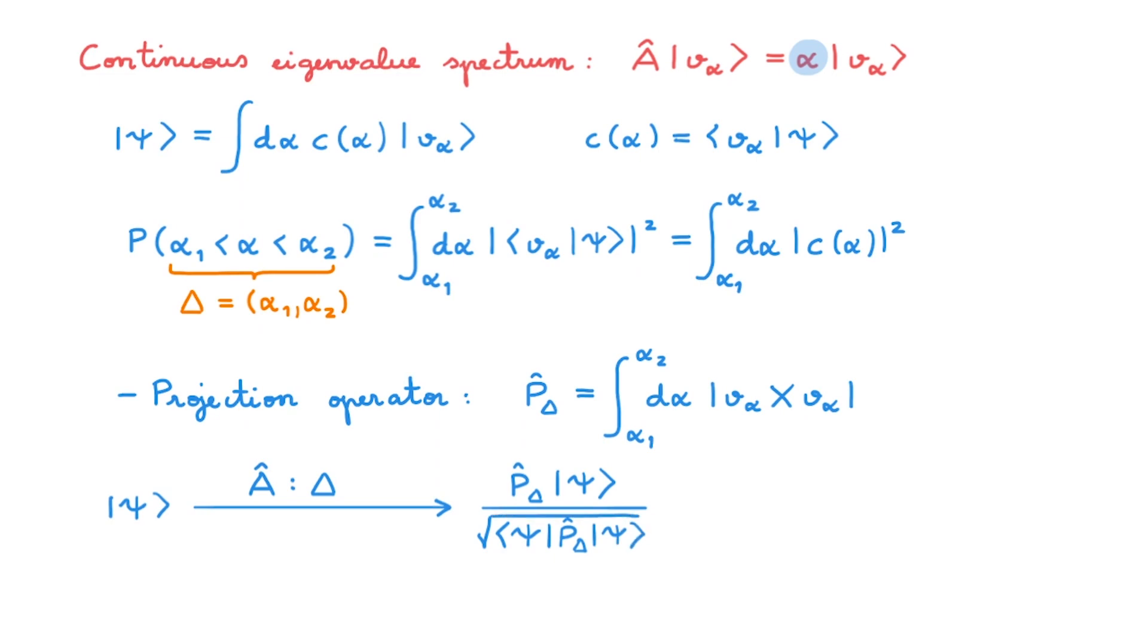So when we have a continuous variable, state collapse works in the same way, but we need to update our mathematical expressions slightly. The most famous example of a continuous variable is position, which leads to the position representation in terms of wave functions. In this example, that many of you will be familiar with, we describe state collapse as wave function collapse.